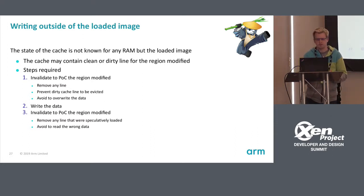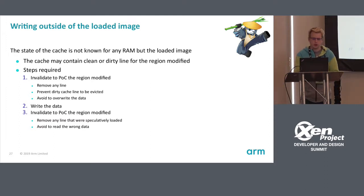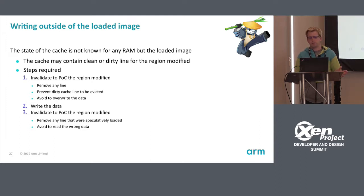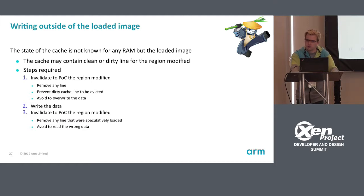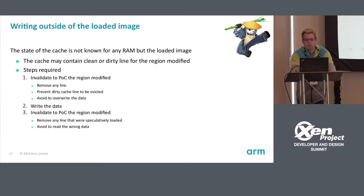For BSS, it's more complicated because it's in RAM and the cache state may be clean or dirty. First, you must invalidate the region — this prevents any dirty line from being evicted and overwriting your data. Then write the data. But you still need to invalidate the cache afterwards, because the cache may speculatively load an entry. Even if you cleaned the cache before writing, it may still contain stale lines, so you may read wrong data if you skip this step.